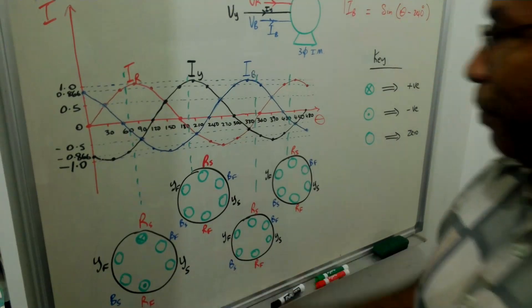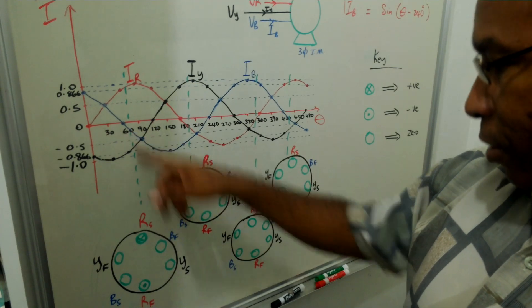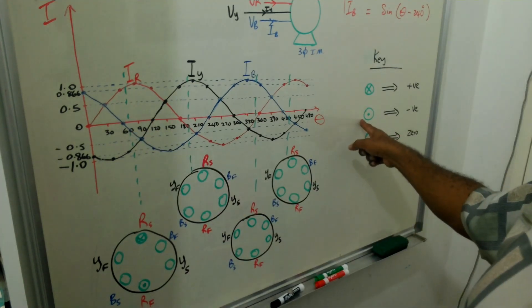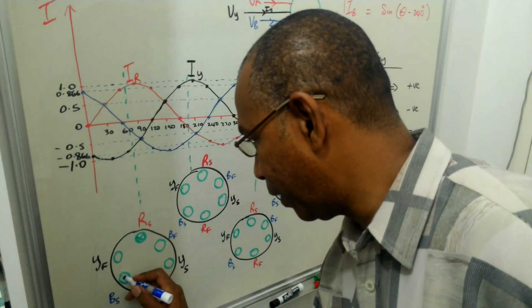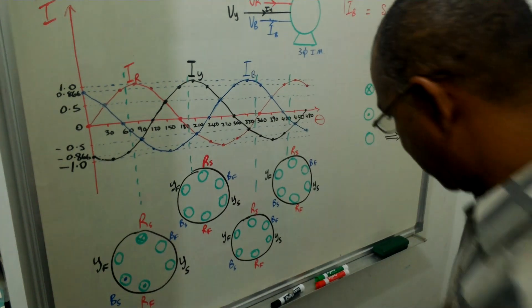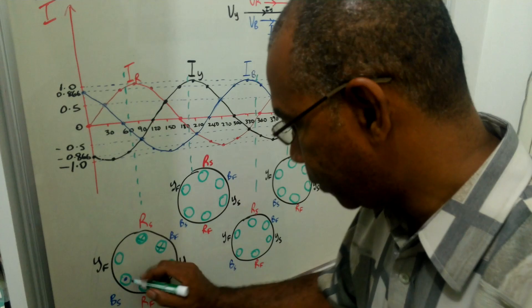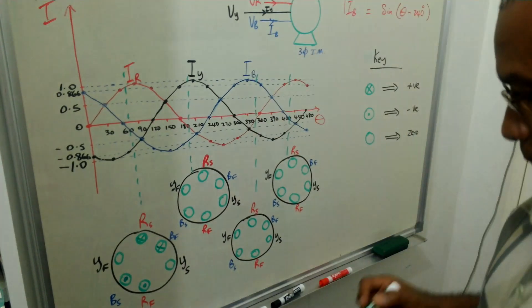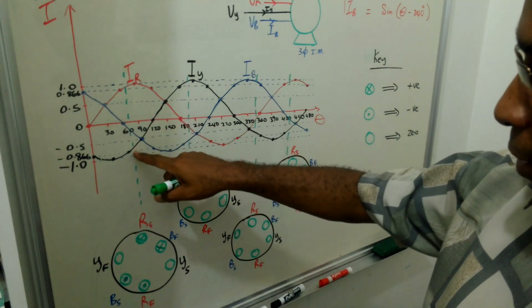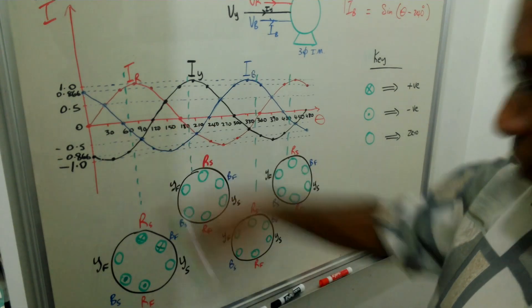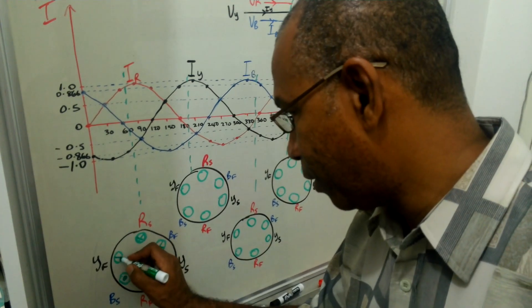Now let us look at what is happening with the blue phase. The blue phase here is negative, which means that the blue start is negative. So there is a dot for the negative, which means that the finish would have a cross. Now let us look at what is happening with the yellow. The yellow is represented by the black here. Also notice that the yellow is negative, so for the start we have a negative dot. So the finish would have a cross.